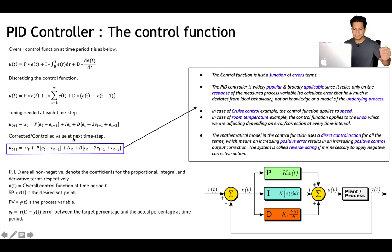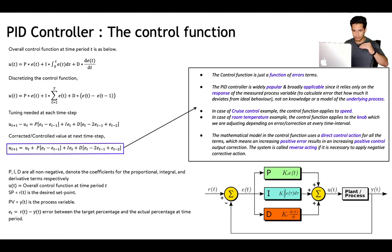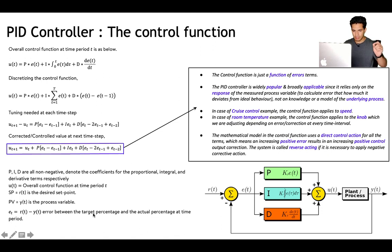The corrected control value at the next timestamp is the control function's value at time t, u(t), plus this correction term. If P, I, and D are non-negative coefficients, u(t) is the overall control function, SP is the set value where we want the control system to be, the process variable is the system's response, and e(t) is just the error between the target SP and the actual process variable PV.